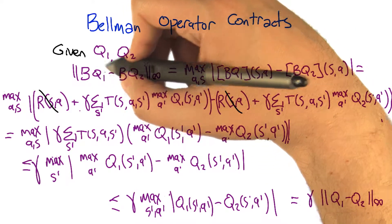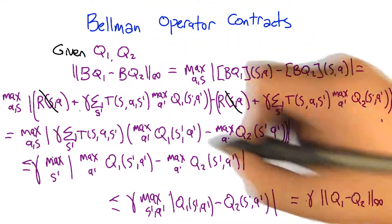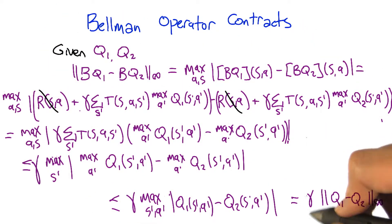That the difference between the two Q functions after we apply the Bellman operator is actually less than or equal to gamma, something smaller than one, times what the distance was before we apply the Q operator—sorry, the B operator. So this is in fact the contraction property of the Bellman operator of value iteration. Well, so Bellman and value iteration converges.